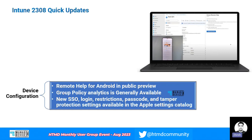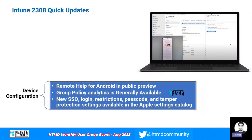Another point is Group Policy Analytics, which was previously in public preview. This is very helpful if you are planning to migrate your on-premises GPOs to the Settings Catalog. It provides much more insight into your on-premises settings and their migration to the cloud. This setting has now moved out of public preview to general availability.